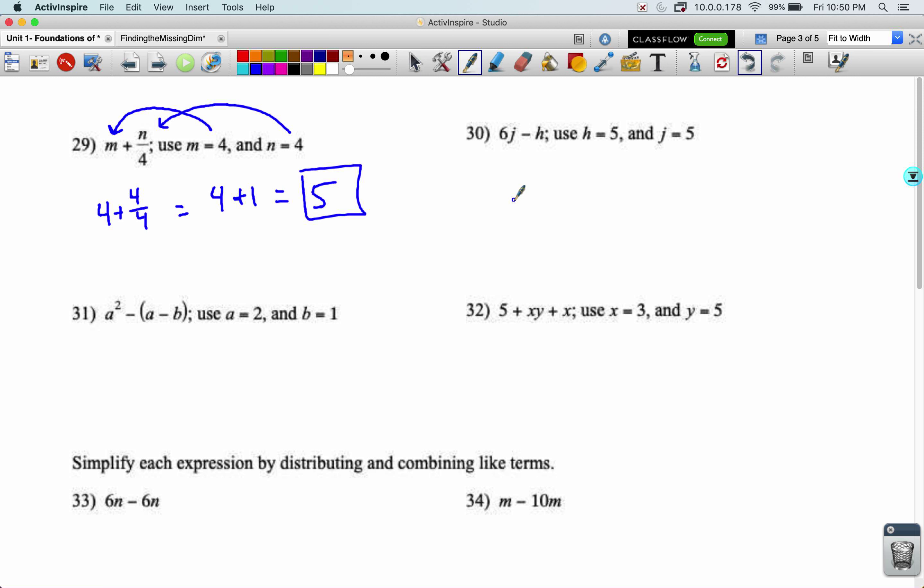Let's look at 30. We're going to plug in a five for H and a five for J. Six times five minus five becomes 30 minus five, 25.